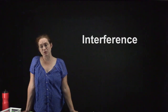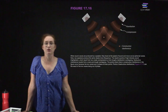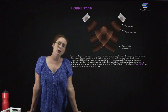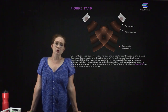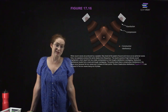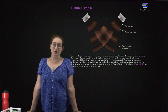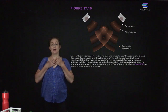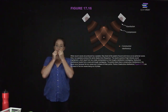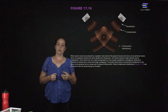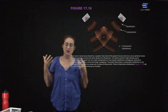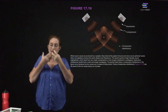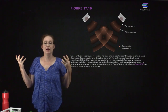We talked about interference when we were talking about mechanical waves. We also have interference when we have sound waves. If you have two speakers which both produce sound, you can end up with interference the same way we did in one dimension when talking about mechanical waves. When you're talking about sound waves, they have a source, and on the scales that we actually perceive, we are actually aware that waves are spherical.